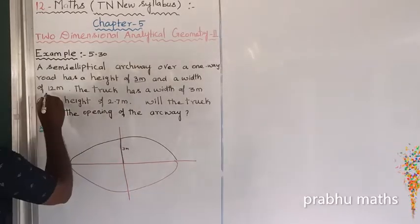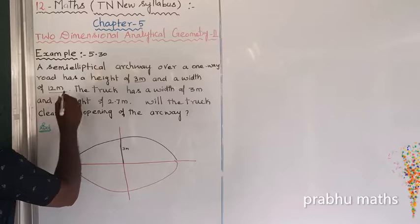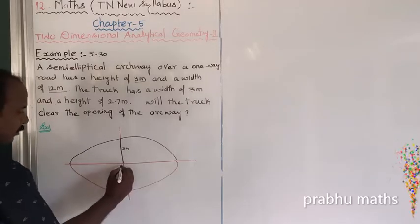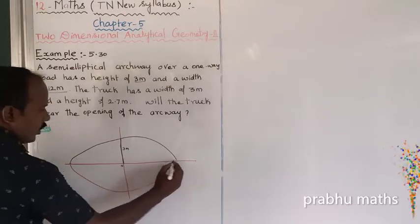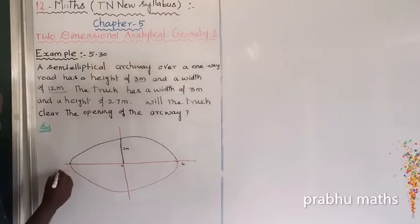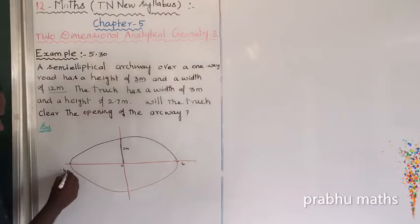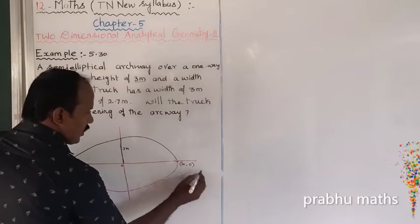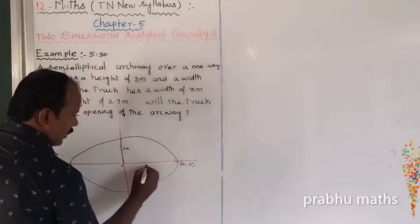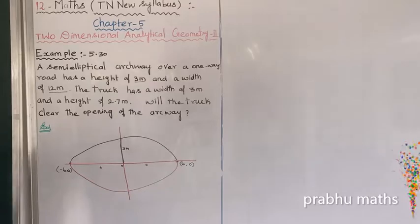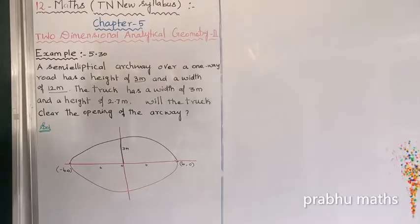Next, for the width: the arch width is 12 meters. On the graph, the endpoints of the major axis are at (-6, 0) and (6, 0), and the top of the arch is at (0, 3). This is the given information.